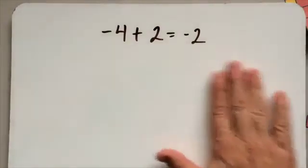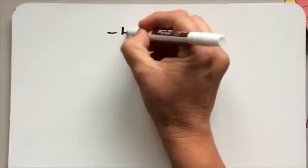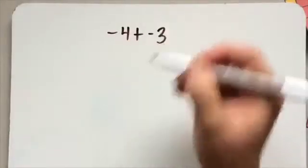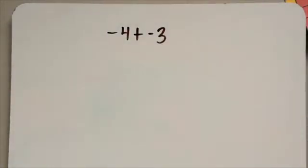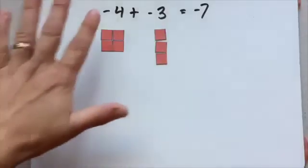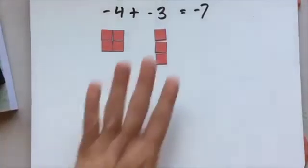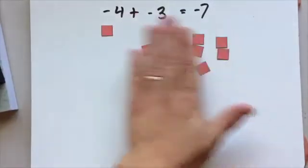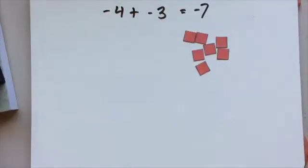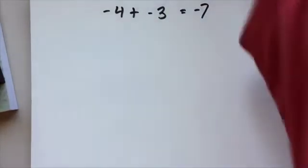Ready to do another one? All right. So our next one is going to be negative four plus negative three. Go ahead and pause the video. Give it a try. All right. How did you do? Negative four, four negative ones. Negative three, three negative ones. All together, seven negative ones. Since it's all negative, your answer is negative seven.